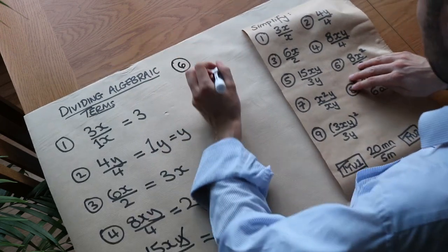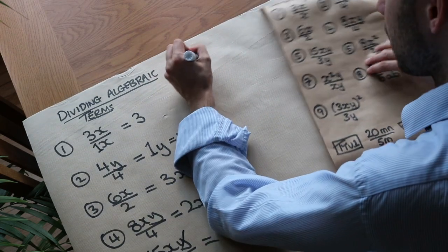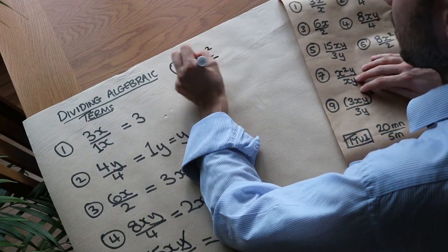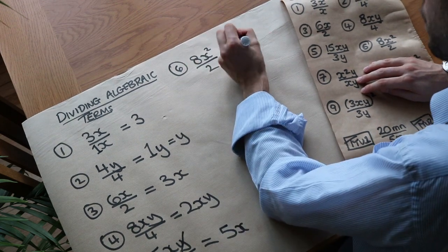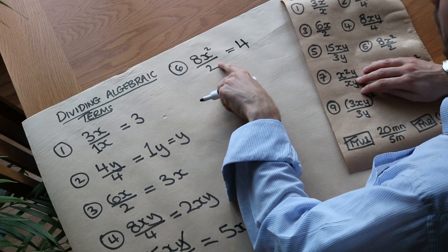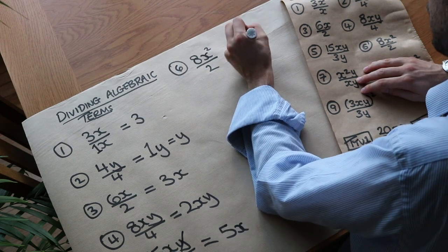What about 6? We have 8x squared divided by 2. And don't be upset by the fact the x is being squared, it just stays as x squared. But we know that 8 divided by 2 is 4. X squared divided by, well there's no x at the bottom, so it just stays as x squared.